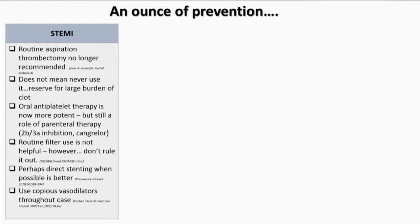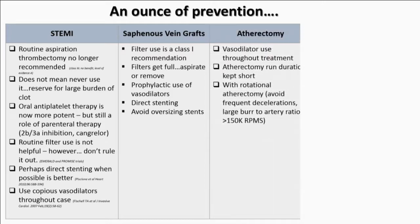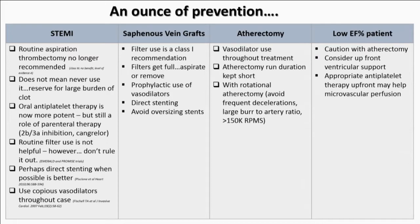For prevention: STEMI routine thrombectomy is no longer recommended, but that doesn't mean never use it — reserve it for large thrombus burdens. Oral antiplatelet therapy is now much more potent, but parenteral therapy can still be considered. Routine filter use in STEMI is not recommended, though there are cases with large thrombus burden where a filter is appropriate. Direct stenting may be better than predilation. In STEMI, use copious vasodilators. For vein grafts, filter use is still recommended; filters get full so aspiration is important. Use prophylactic vasodilators, avoid oversizing stents in vein grafts. For atherectomy: short runs and vasodilators. For low-EF patients, think about ventricular support.